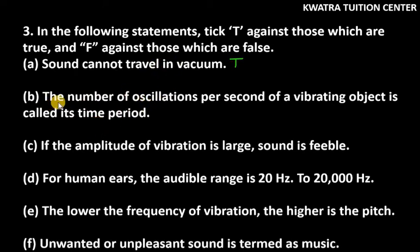B is the number of oscillations per second of a vibrating object is called its time period. So, ye toh galat hai ki time period nahi hota. Kya hota hai? Frequency. Therefore, this is wrong.